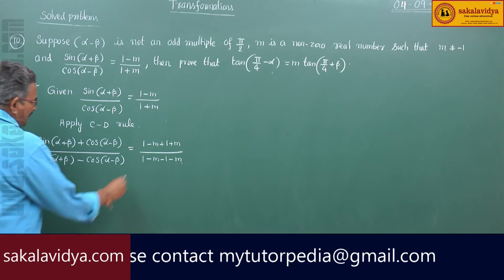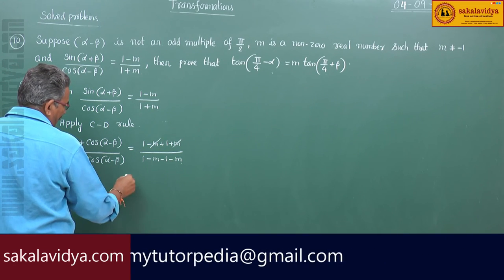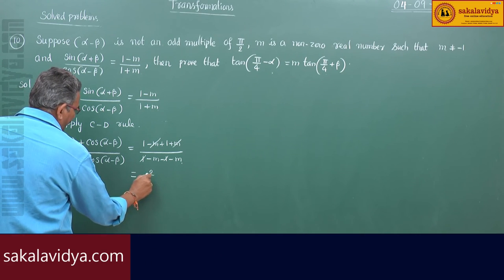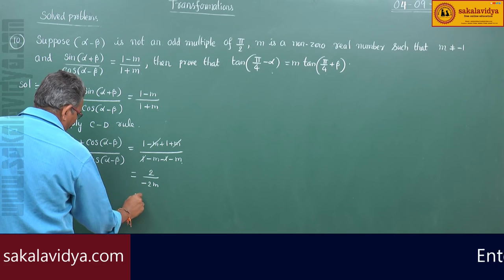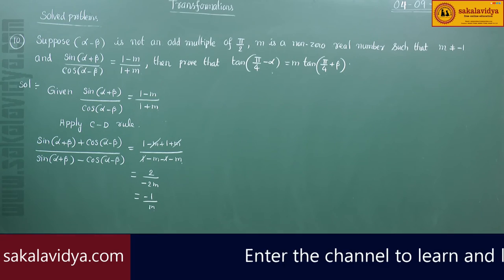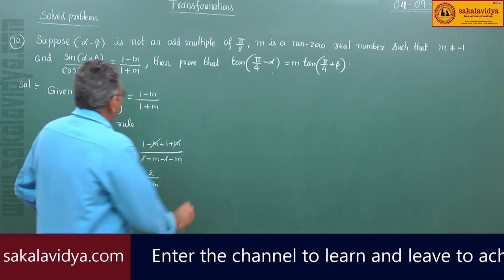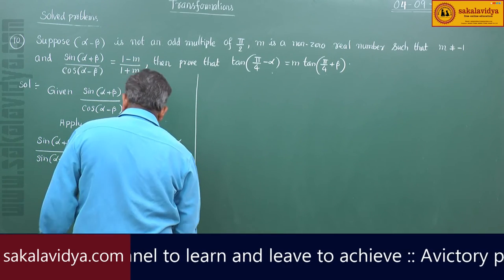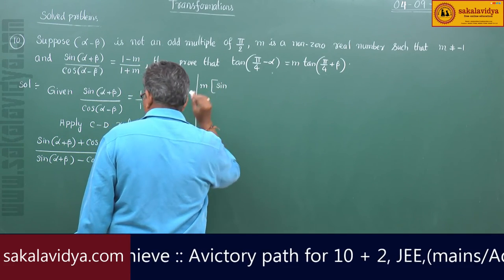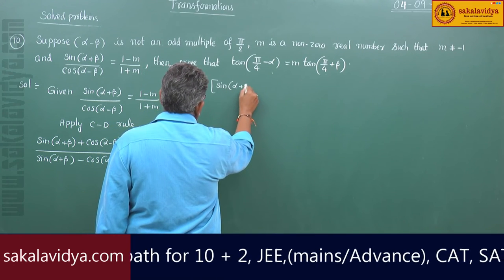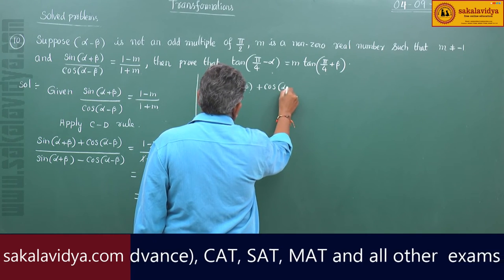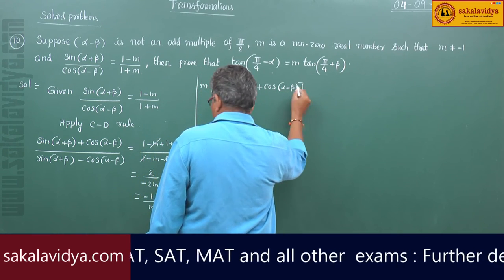Now what happens here: m and m get cancelled on the numerator giving 2, and 1 and 1 get cancelled on the denominator giving minus 2m. So the right hand side is minus 1 by m. Cross multiplying gives m times (sin(alpha plus beta) plus cos(alpha minus beta)) equals minus (sin(alpha plus beta) minus cos(alpha minus beta)).